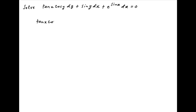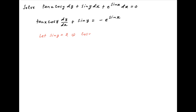The given differential equation can be rearranged as tan x times cos y times dy upon dx plus sin y is equal to minus of e raised to the power sin x. Now let sin y equal to z. Taking the derivative of both sides with respect to x, we get cos y dy upon dx is equal to dz upon dx.